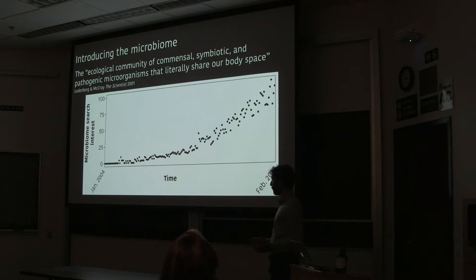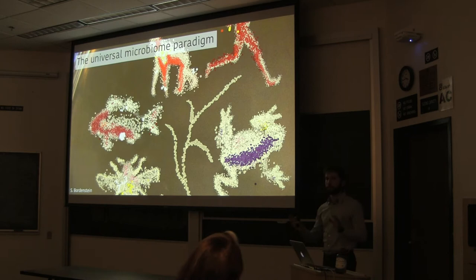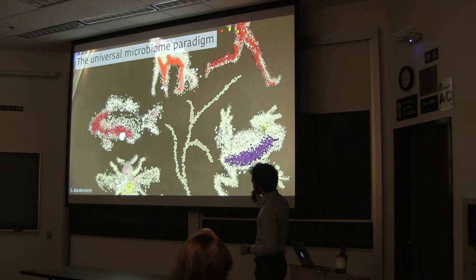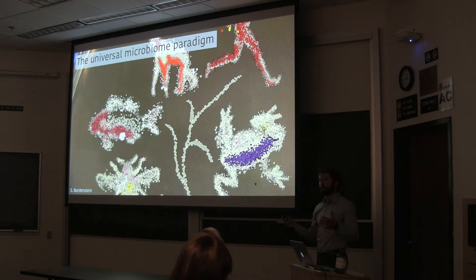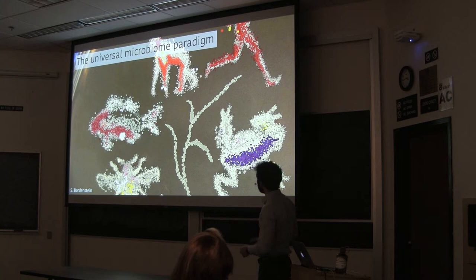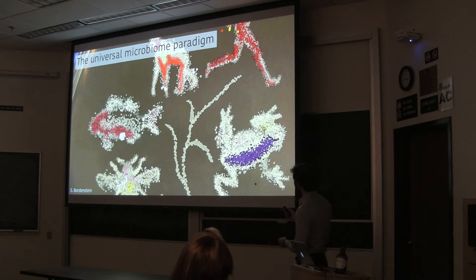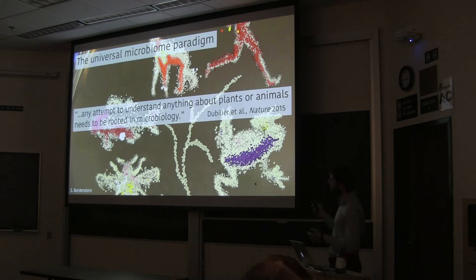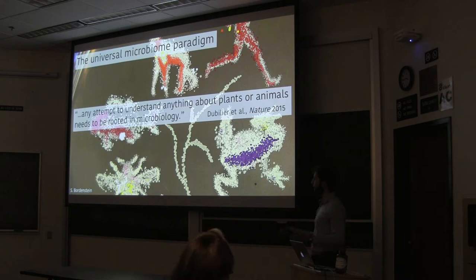The tools to study microbiomes are now widely available, and lots of people are studying the microbiome of their favorite organisms. I'm calling this the universal microbiome paradigm. It's best shown by this picture: bacteria painted onto an agar plate showing the phylogeny of animals. According to this view, animals and plants are essentially window dressing for what are really microbial ecosystems — the sentiment being that any attempt to understand anything about plants or animals needs to be rooted in microbiology.